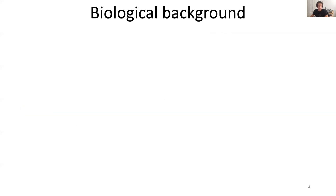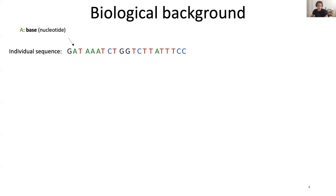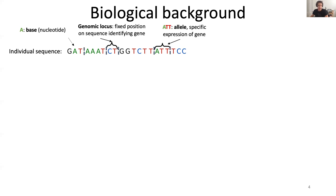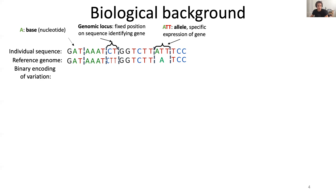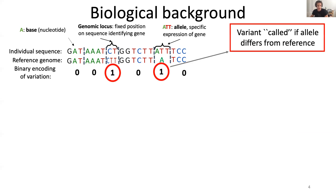I will now dive into the biological background to make my statements more precise. In modern genomic datasets, we observe individual genomic sequences. The atomic unit of the sequence is a base or nucleotide, and fixed positions on the sequence identifying genes make up genomic loci. Different sequences can have specific expression of alleles for the same locus. Another input of the problem is a standardized ideal genomic sequence for the population under study, the so-called reference genome. For every sequence and every locus, we can compare the expression on that locus to the one of the reference, so as to create a binary encoded variation. The expression of the first locus coincides for both sequences, and the same is true for the second locus; however, the third locus differs.